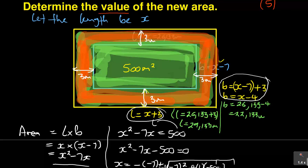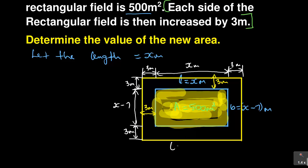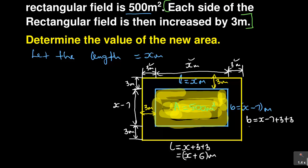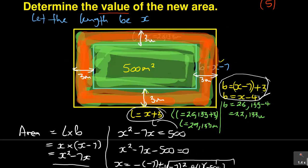So the correct new length is: three plus x plus three, which equals x plus 6. That is where the error was made. The correct new breadth is: three plus (x minus 7) plus three, which equals x minus 7 plus 6, which equals x minus 1 meters. Previously I had used x plus 3 as the new length and x minus 4 as the new breadth, which were both wrong.